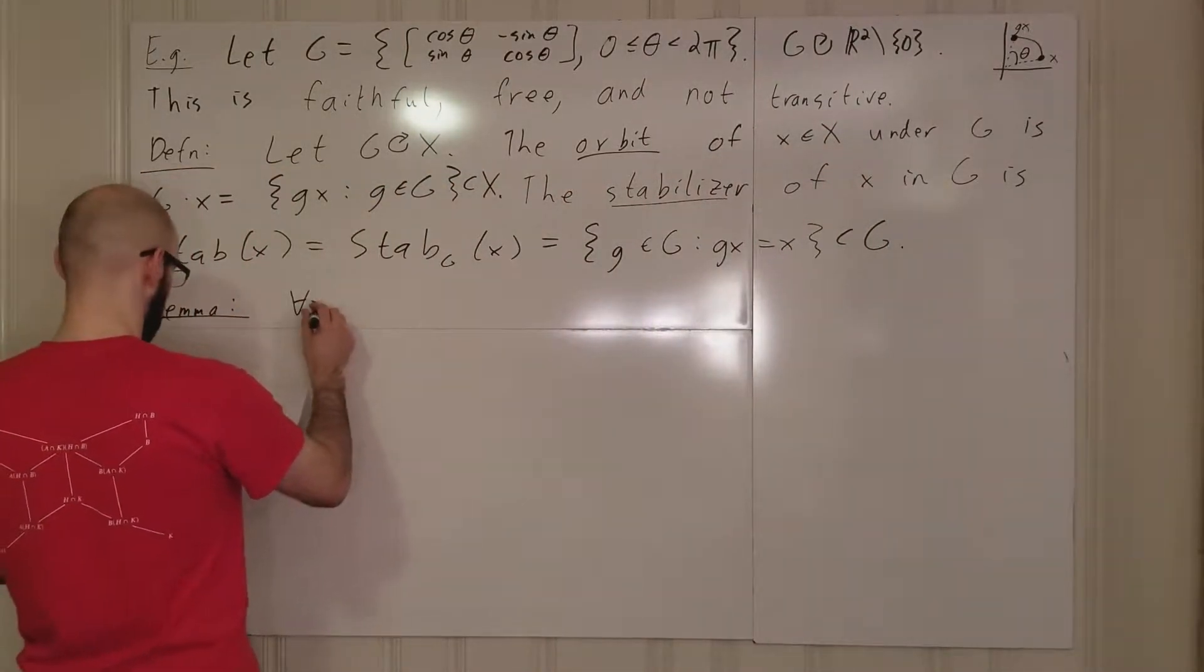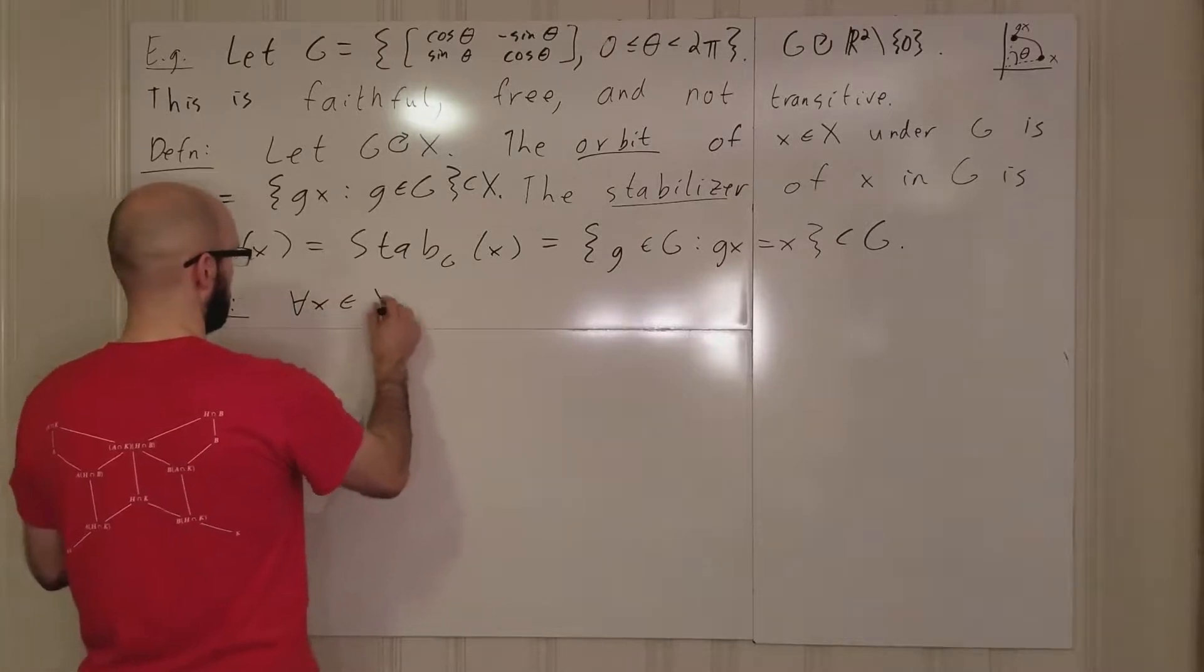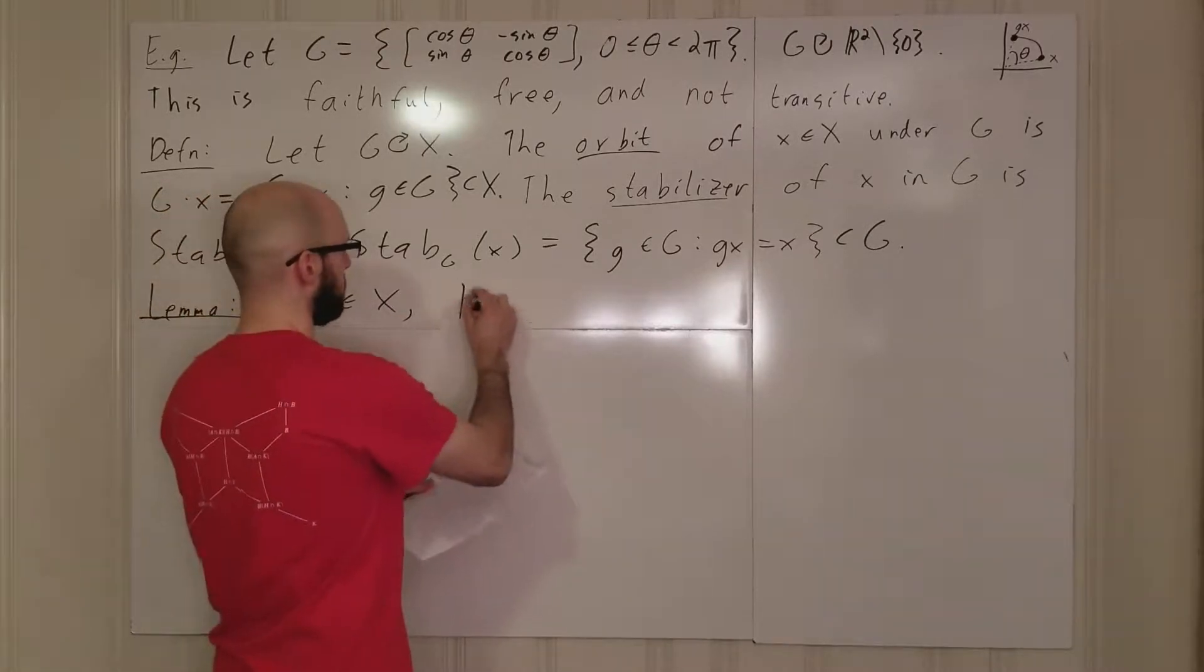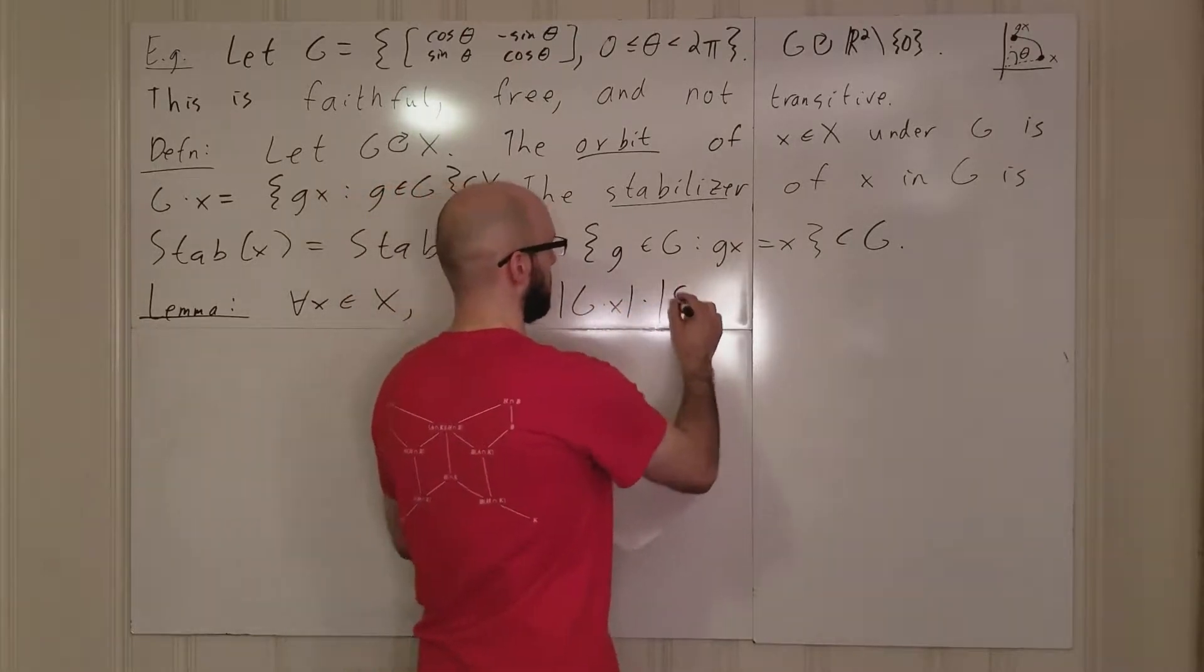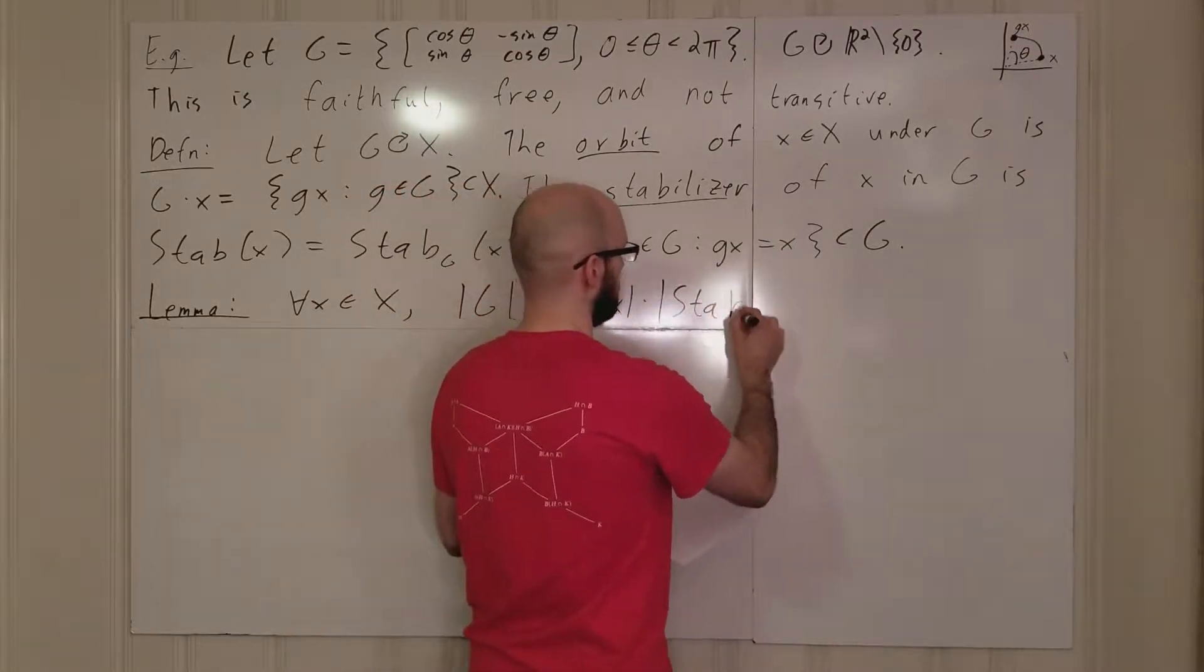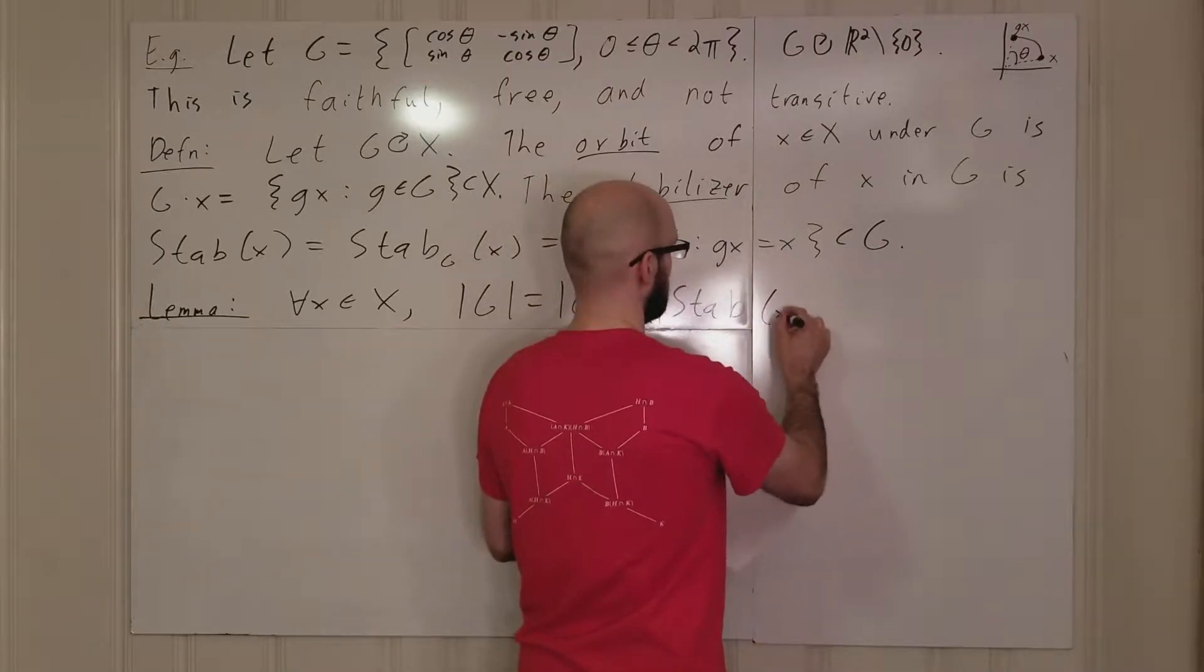So, for all x in big X, the order of g is equal to the order of the orbit times the order of the stabilizer.